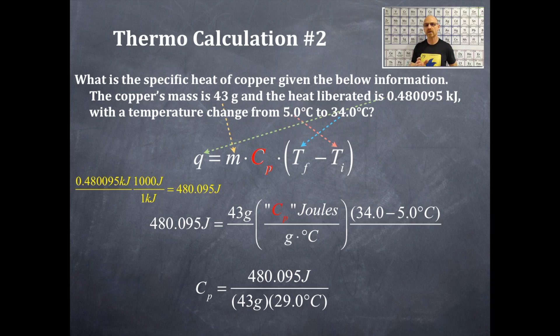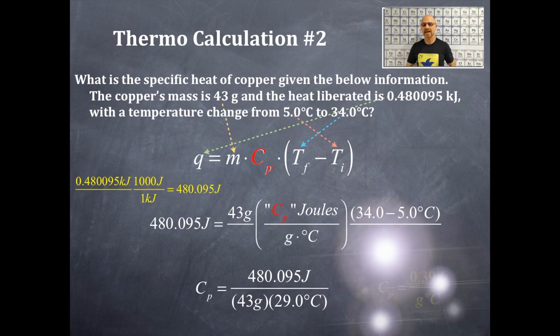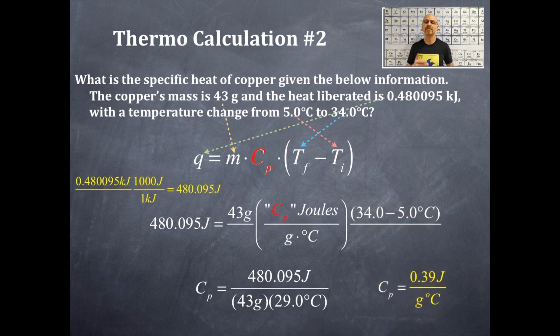You should see that before you carry on and plug these numbers in your calculator, you're going to get the units that you would expect to get for the specific heat capacity, which would be joules per gram degree Celsius. So now you're going to take the 480.095, divide by 43, and then divide by 29.0. And you're looking at the fewest number of significant figures, which is two in this particular problem. And so I'm going to round my number to two significant figures. So I have a number for the specific heat capacity of 0.39 joules per gram degree Celsius.